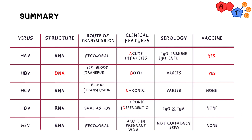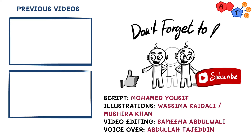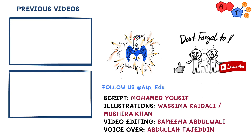To summarize, let's take a quick look at the table shown at the start — we covered all the main points for each virus. Make sure you know whether each virus is RNA or DNA, whether it causes an acute or chronic presentation, and learn the relevant serology. You may want to watch the video a couple of times, especially the hepatitis B serology section. That's it for viral hepatitis — thanks for watching.